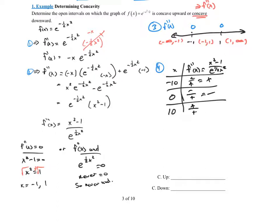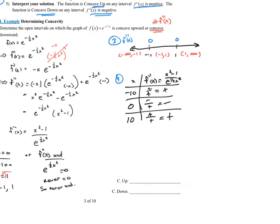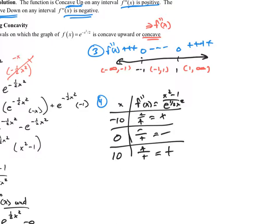Plugging in negative ten: negative ten squared minus one is clearly positive, and the denominator is always positive since e to any power is always positive — so positive over positive is positive. Plugging in zero: zero squared minus one is negative, so negative over positive is negative. Plugging in ten: ten squared minus one is positive, so positive over positive is positive. Therefore: the first interval, negative infinity to negative one, has f double prime positive; the second interval, negative one to one, is negative; and the third interval, one to infinity, is positive.